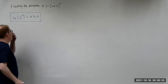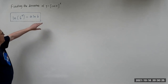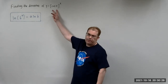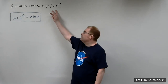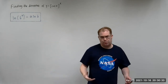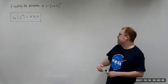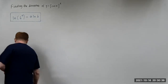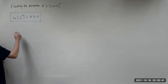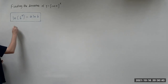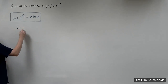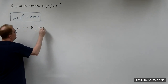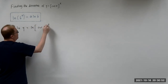In order to use this, we can't just take the natural log of one side — otherwise we'll be changing the original problem. So what we have to do is take the natural log of both sides. We're going to have the natural log of y equals the natural log of cosine x raised to the x power.